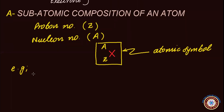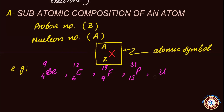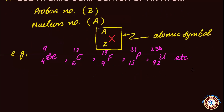Some examples of atomic symbols: beryllium is 4Be9, carbon is 6C12, fluorine is 9F19, phosphorus is 15P31, and uranium is 92U238. If both Z and A are known for an atom, its subatomic composition can be worked out.